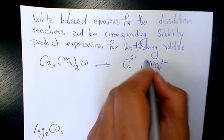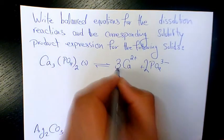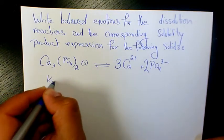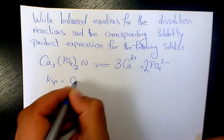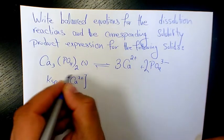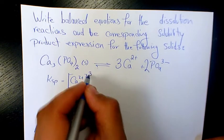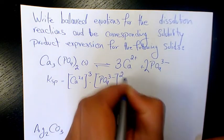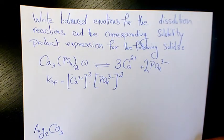When you balance it we have two here and we have three in here. So Ksp will be the concentration of calcium to the power of three times the concentration of phosphate to the power of two.